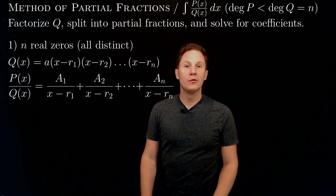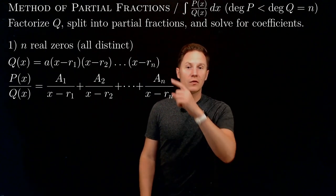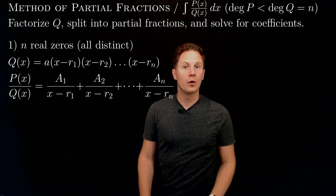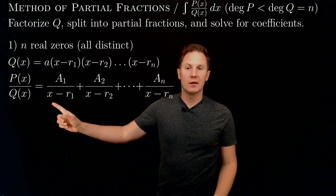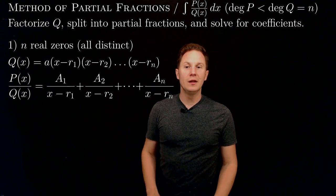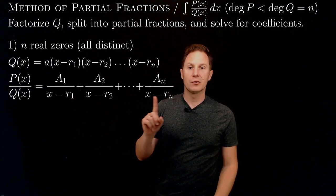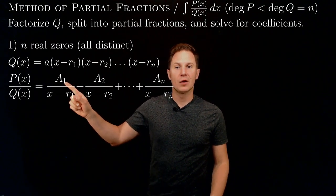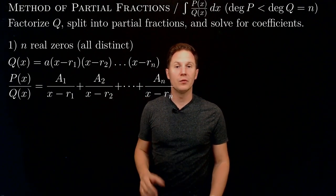If all zeros of q are real and distinct, then q has a factorized form as the product of linear terms that are all different. In that case, p over q can be written as the sum of these partial fractions, with the roots or zeros of q appearing in the denominator. The unknown coefficients a1 to an are the ones we need to find.